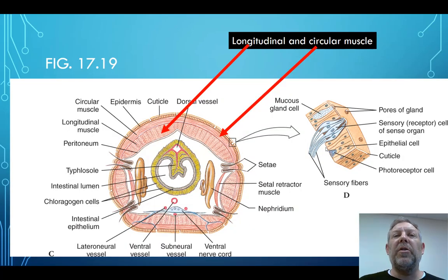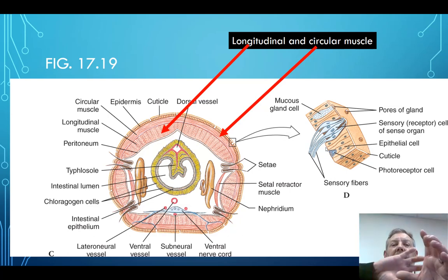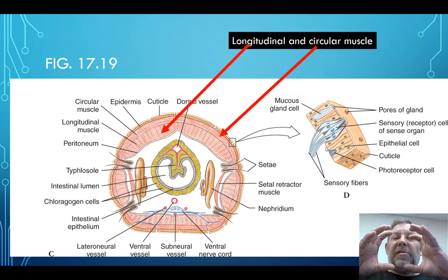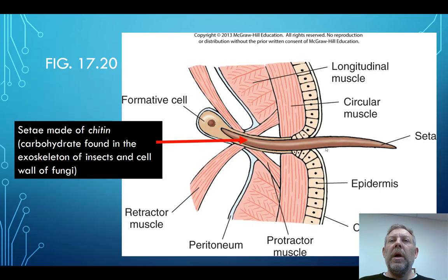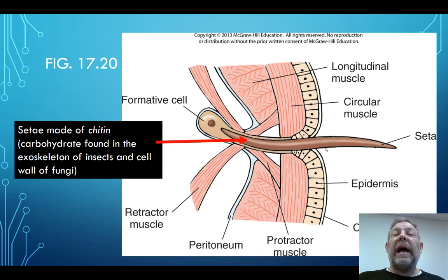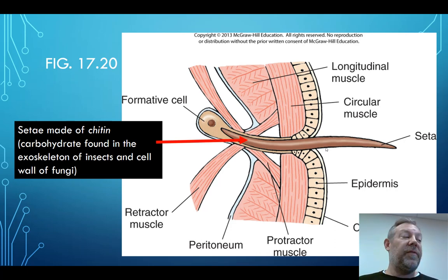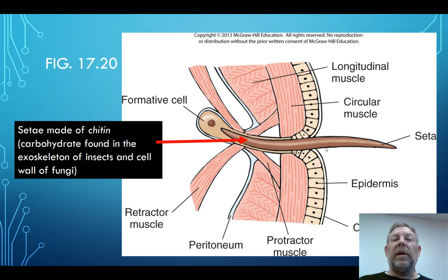Here's a cross section from a figure in your book showing some of the different structures in the earthworm. They've got two kinds of muscle: circular muscle that wraps around the segment, and longitudinal muscle that runs along the long axis of the worm. The circular muscle can contract and decrease the diameter of each segment, whereas the longitudinal muscle can contract and make the worm turn left and right. They've also got structures called setae — these are made of chitin, a carbohydrate also found in the exoskeletons of insects or the cell walls of fungi. The setae are stiff little bristles that they can control with muscles, extending or retracting them, and they're important in locomotion.